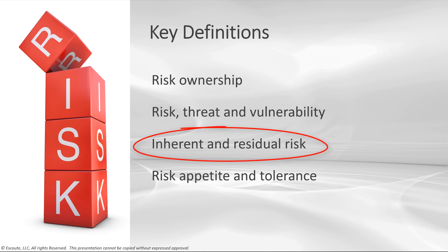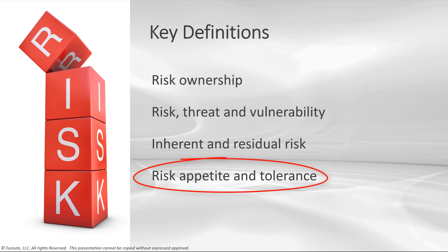Inherent risk is normally high for most IT areas because it assumes we have not put any risk responses or controls in place — here's what could happen if we don't treat that risk. If we do treat it, what's left is residual risk, which management can use to determine which areas require more controls. Finally, risk appetite is the amount of risk, on a broad level, that an organization is willing to accept in pursuit of its mission. Tolerance is the degree of uncertainty — the acceptable level of deviation based on scenarios that might occur.